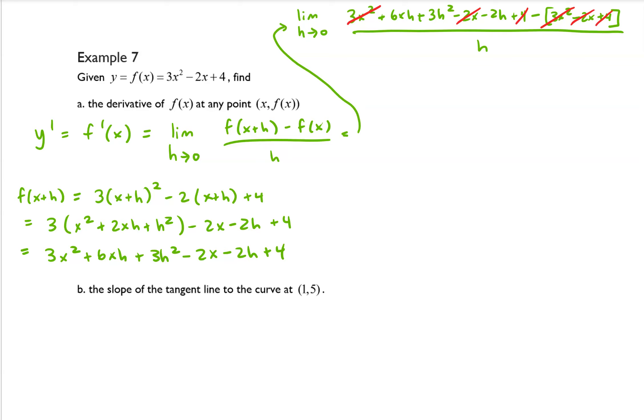So those all have canceled out, and now that equals the limit as h goes to 0 of 6xh plus 3h squared minus 2h all over h, and that equals the limit as h goes to 0 of 6x plus 3h minus 2.